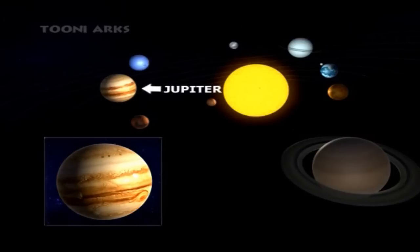Jupiter is the fifth planet from the Sun and the largest planet within the solar system. Jupiter is described as a gas giant.